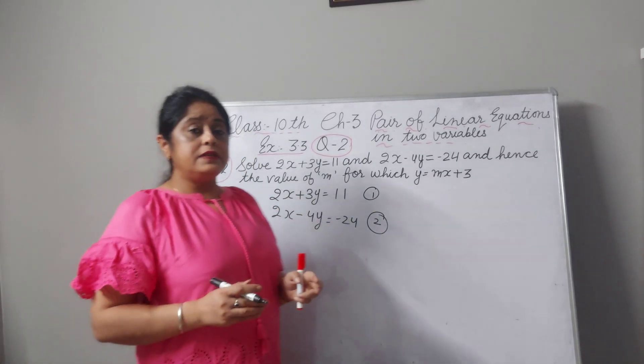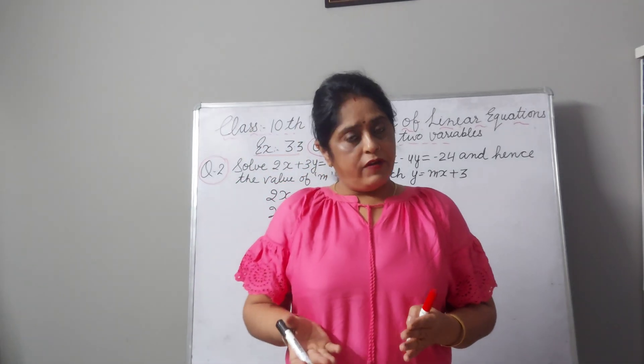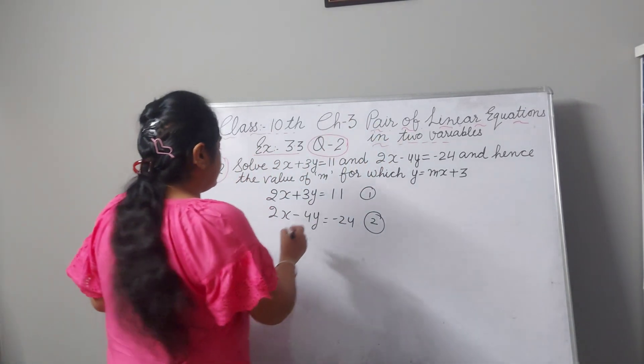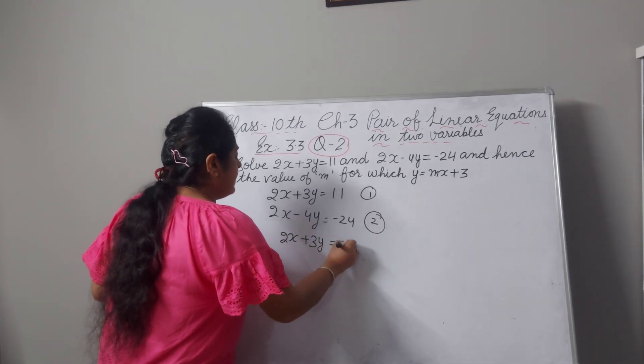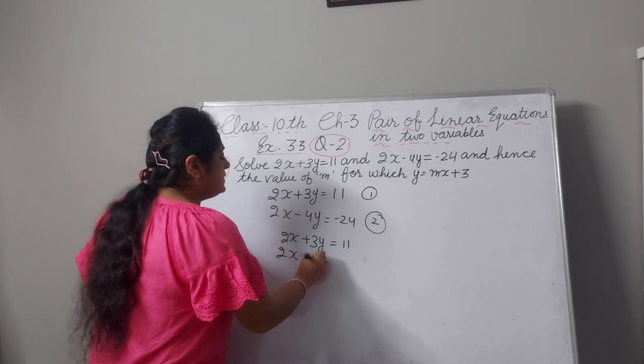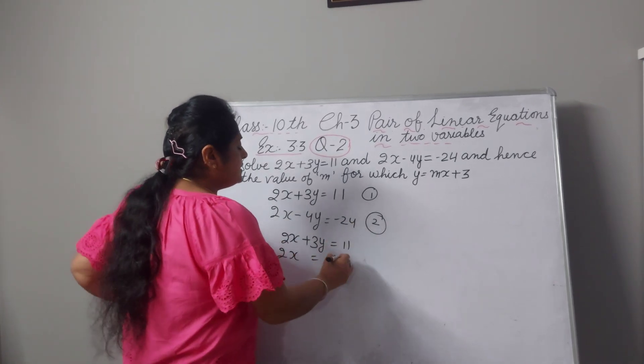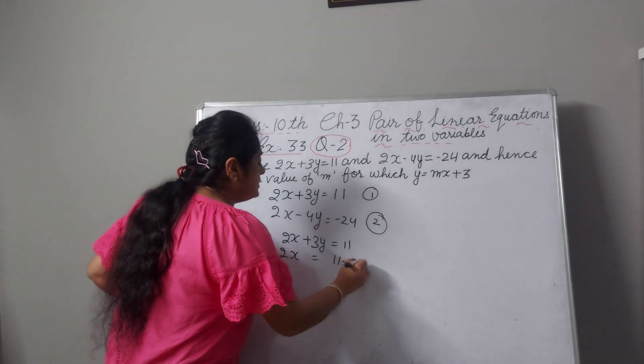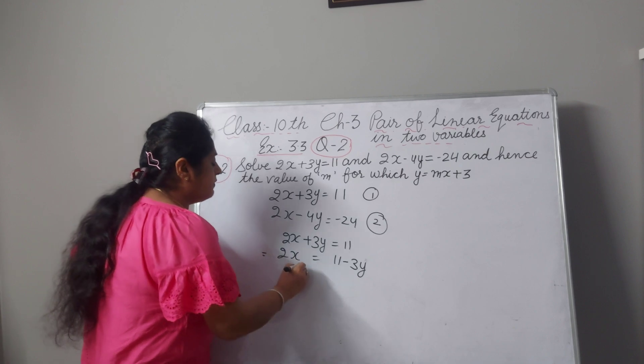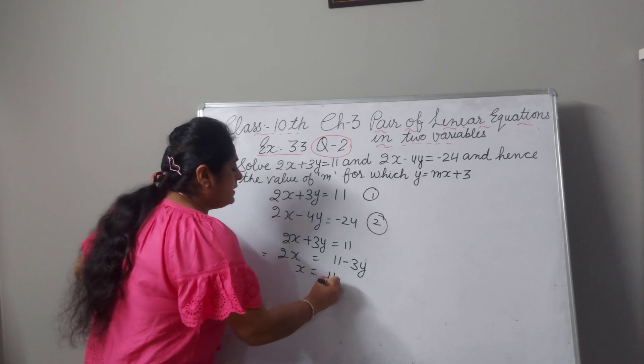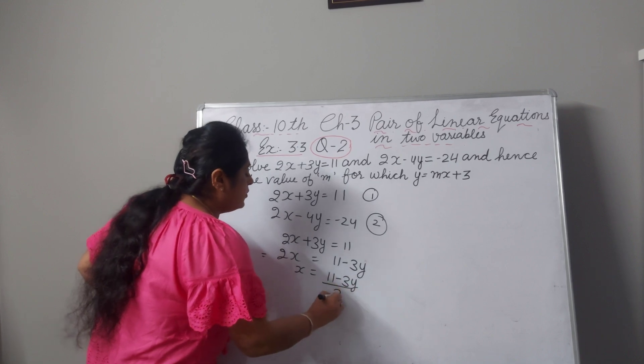Now first equation, either you can calculate the value of x or y, it depends on you. 2x plus 3y equal to 11, so 2x is 11. This 3y went into right hand side, sign will be changed and this 2 is multiplied here. Here it will come and will divide. x value will be 11 minus 3y upon 2.